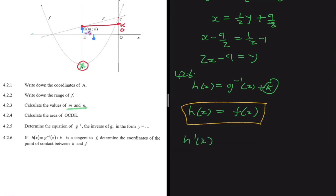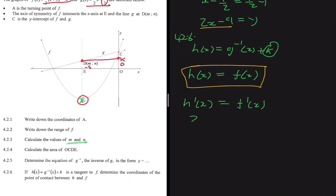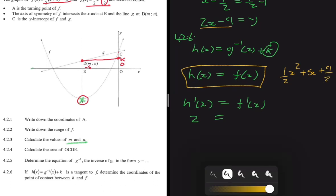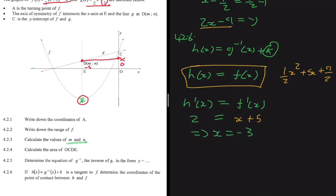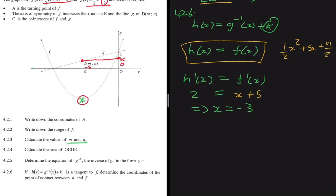Setting h'(x) = f'(x): differentiating h(x) gives 2 (since -9 and k are constants). Differentiating f(x) = ½x² + 5x + 9/2 gives x + 5. So 2 = x + 5, which means x = -3. That's the x-coordinate of the point of contact.